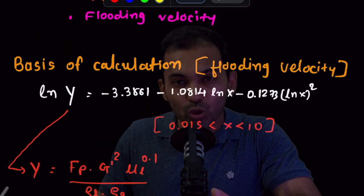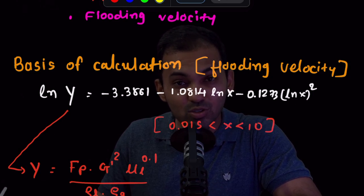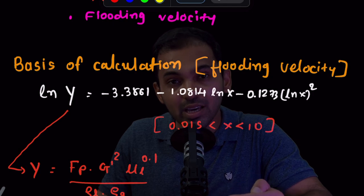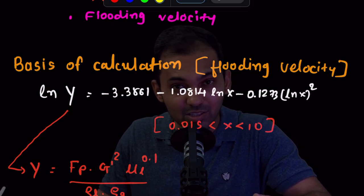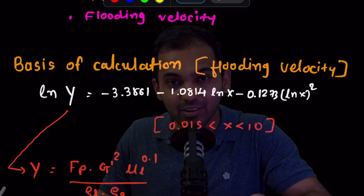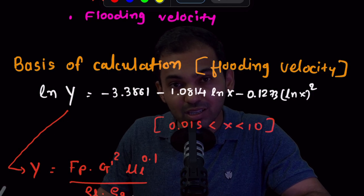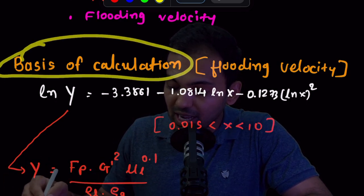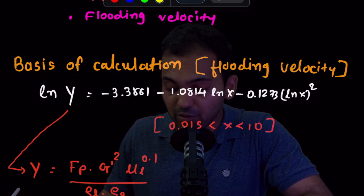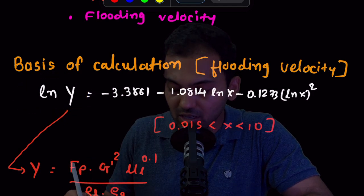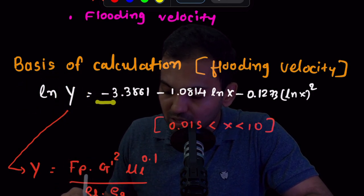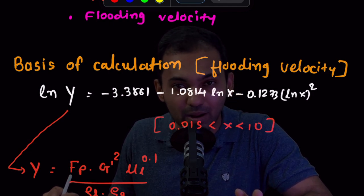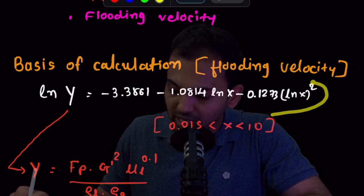In any tower diameter calculation, the first basic parameter is flooding velocity — that is the maximum velocity. Once we know the flooding velocity, we get actual velocity, then mass velocity, and finally using density and area we find the diameter. For packed columns, there is a specific equation to find flooding velocity, as you may see on the screen. The equation is: ln(Y) = −1.0814 × ln(X) − 0.1273 × ln(X)², where X is the flow parameter.